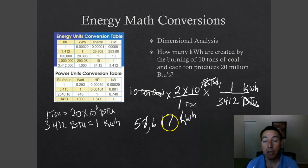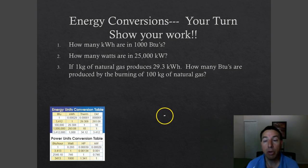That's how many kilowatt hours are produced by burning 10 tons of coal. These are the kind of calculations you're going to be asked to do. So your homework for these notes: How many kilowatt hours are in 1,000 BTUs? How many watts are in 25,000 kilowatts? And if you have one kilogram of natural gas that produces 29.3 kilowatt hours, how many BTUs are produced by the burning of 100 kilograms of natural gas? Have those ready to go in class, and I will see you soon. Hope that's helpful.